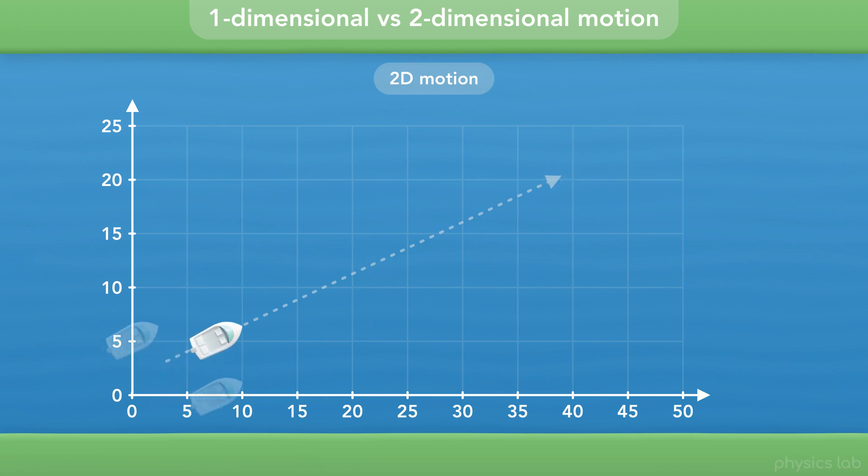It's two-dimensional motion because its position is changing along two different axes. Even though both axes, both directions, are horizontal relative to the ground, we can still use the X axis for the left and right direction, and the Y axis for the up and down direction from this point of view.